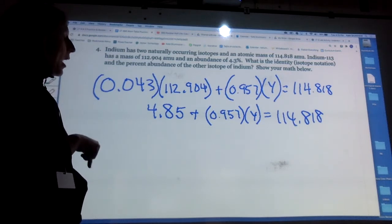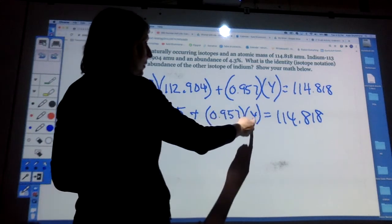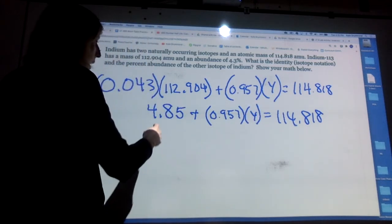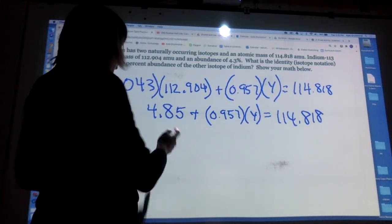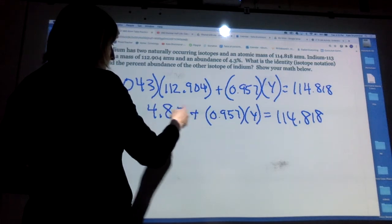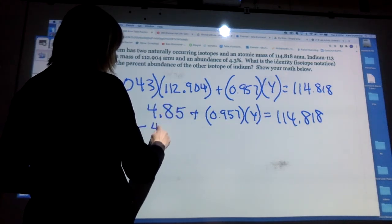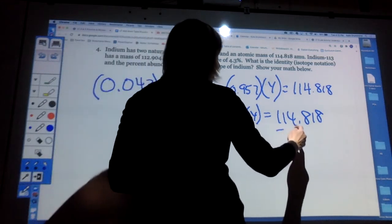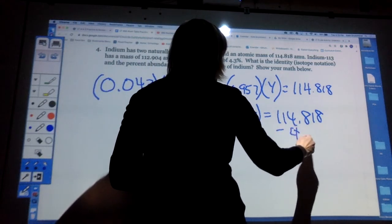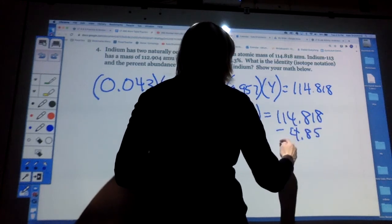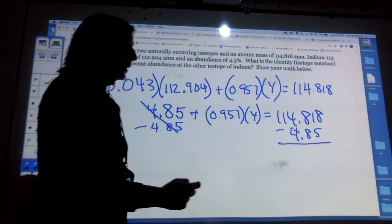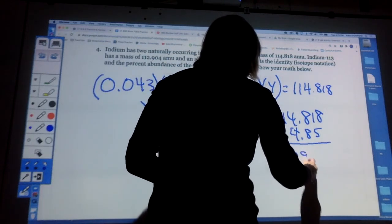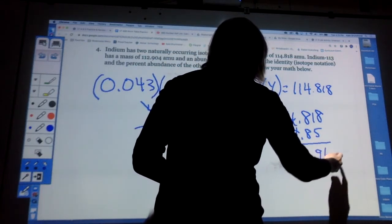So now I want to isolate this variable for y and solve for it. So I want to simplify even more, so I'm going to take this number that's added here and I'm going to subtract it from both sides, so it cancels out over here. And 114.818 minus 4.85 over here and I'm going to get 109.968, and over here I will have 0.957 times y.